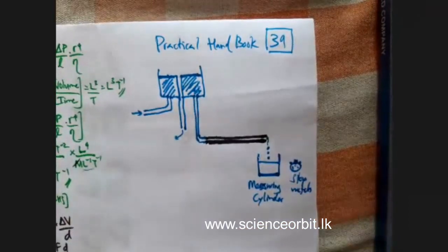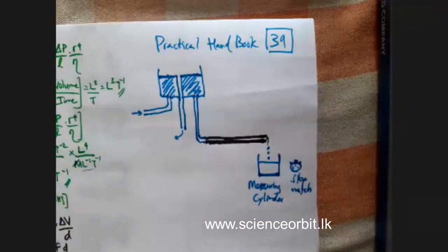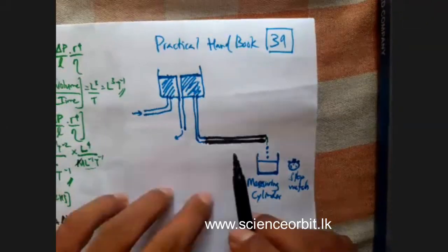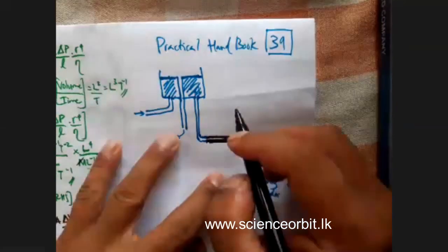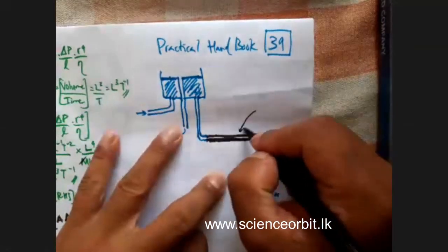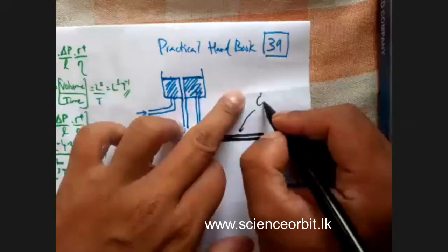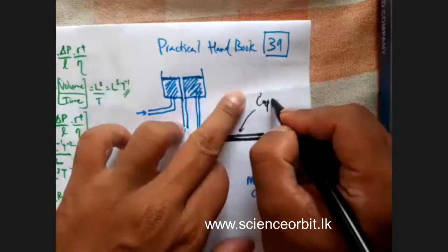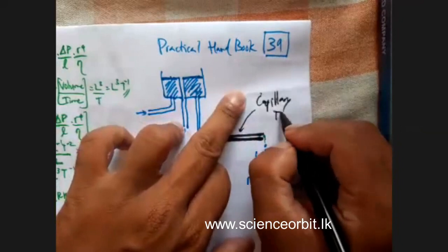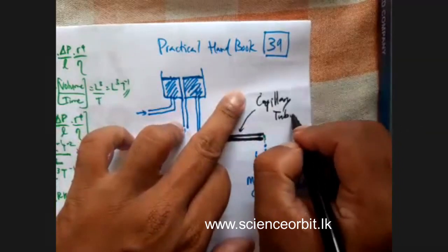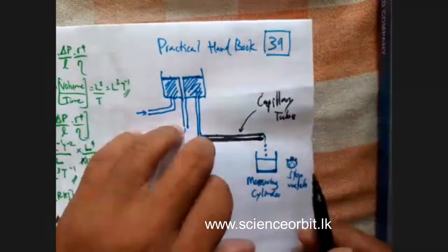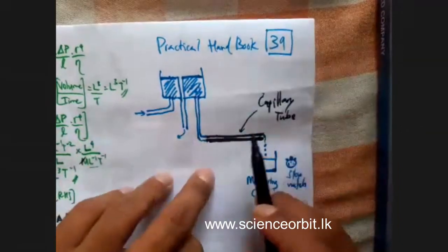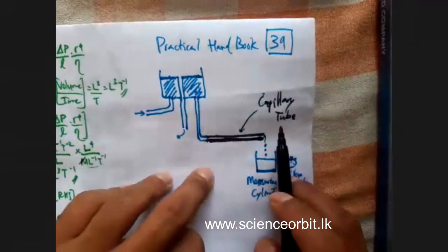There are a few things we have to understand. First of all, this is a capillary tube. Poiseuille's law is valid only for laminar flow through capillary tubes.